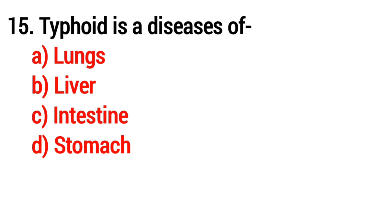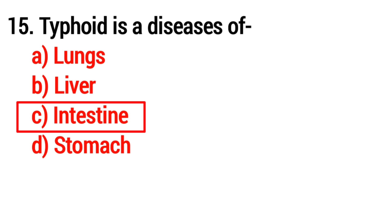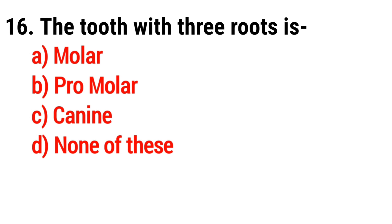Question 15. Typhoid is a disease of which organ? Option C: Intestine. Question 16. The tooth with three roots is Option A: Molar.